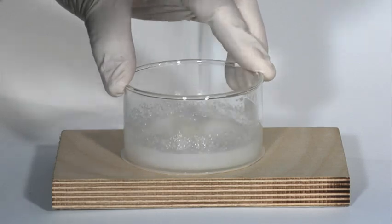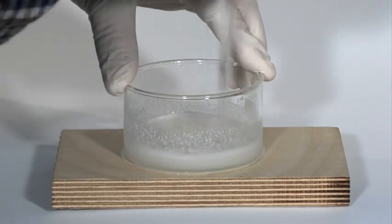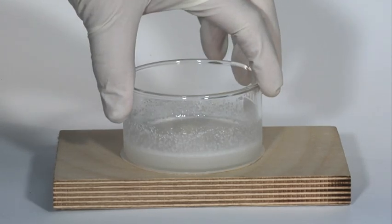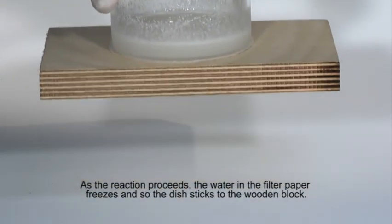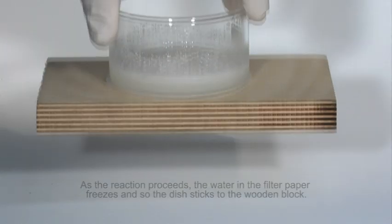The temperature drop is approximately 35 degrees Celsius and sufficient energy is transferred from the wet filter paper to the dish so that the water in the paper freezes and sticks the dish and wooden block together.